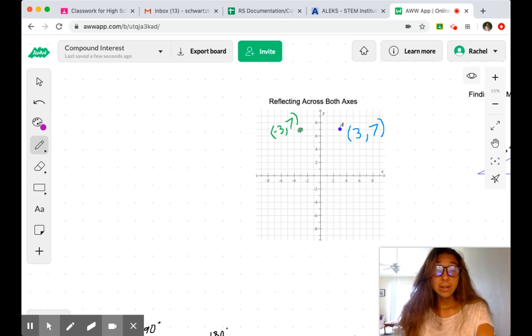And because we're reflecting, we need this distance to be mirrored down here. And so we stay at negative 3. But now, make sure I get this right, we're going down to negative 7. And so our final point that we're reflecting is going to have the coordinates negative 3, negative 7.